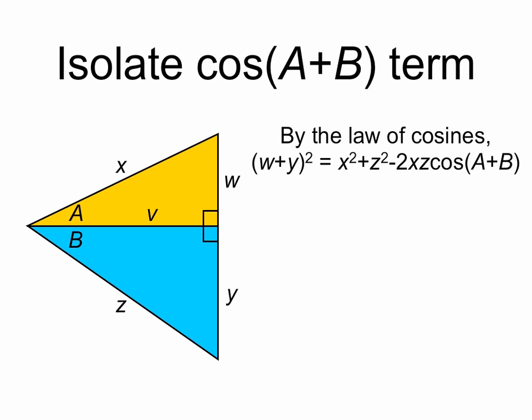And now our goal is to isolate this cos a plus b term. So first we can expand w plus y squared into w squared plus y squared plus 2wy, which equals x squared plus z squared minus 2xz cosine a plus b.